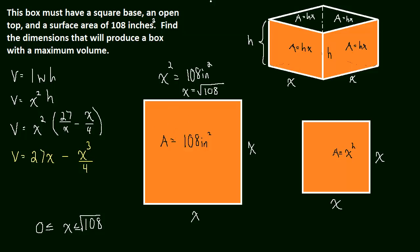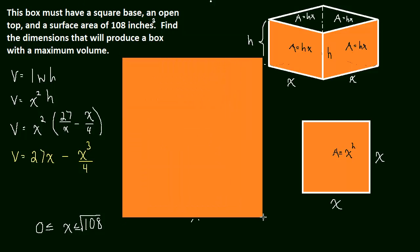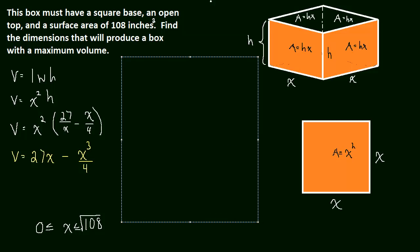That's the domain of the function according to the restrictions we've been given. That's important to keep in mind. Don't forget to consider the domain of the function because you may be missing the correct answer. The domain is 0 ≤ x ≤ √108.